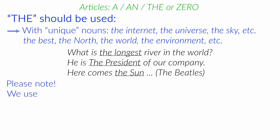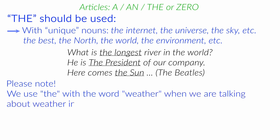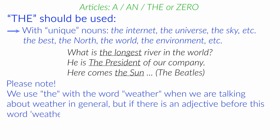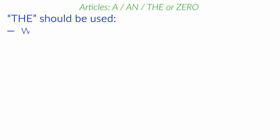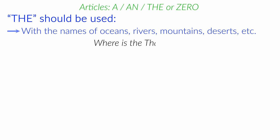Please note, we use the with the word weather when we are talking about weather in general. But if there is an adjective before the word weather, then the article is not used. For example, in spring the weather is often sunny. I like sunny weather. With the names of oceans, rivers, mountains, deserts, for example. Where is the Thames? I've never been to the Sahara Desert.